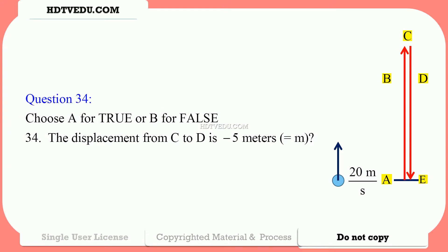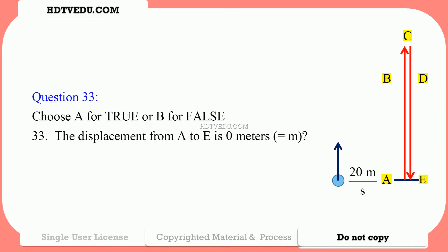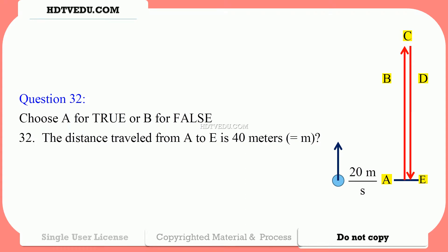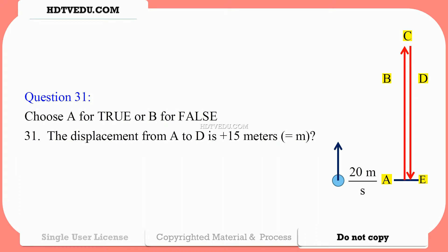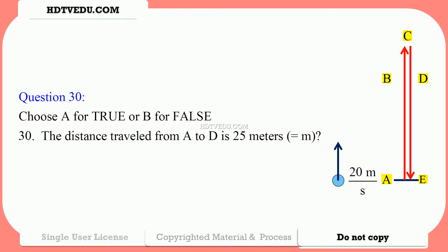Question 34: displacement from C to D is negative 5. Question 33: displacement from A to E is 0. Question 32: the distance traveled from A to E is 40 meters — distance is always a scalar. Question 31: displacement from A to D is positive 15 meters. Question 30: distance traveled from A to D is 25 meters.